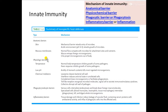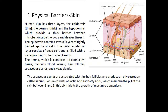Other anatomical barriers include mucous membranes lining the gastrointestinal tract and respiratory tract, which prevent the entry of foreign microorganisms. Cilia attached to mucous membranes propel microorganisms out of the body. The normal microflora associated with the mucous membrane competes with pathogenic microbes for attachment sites and nutrients.